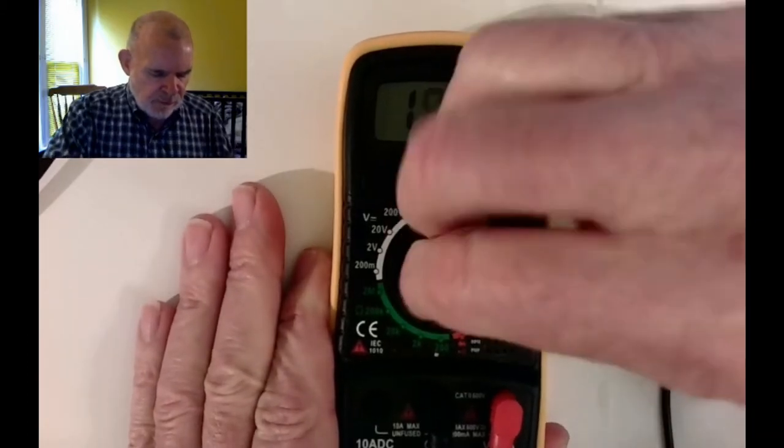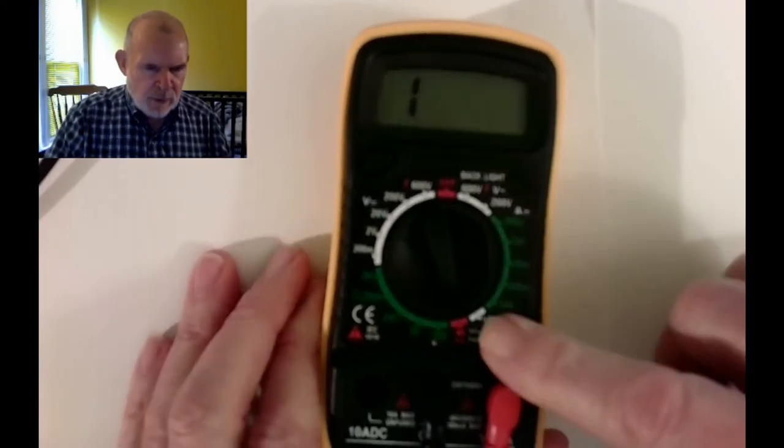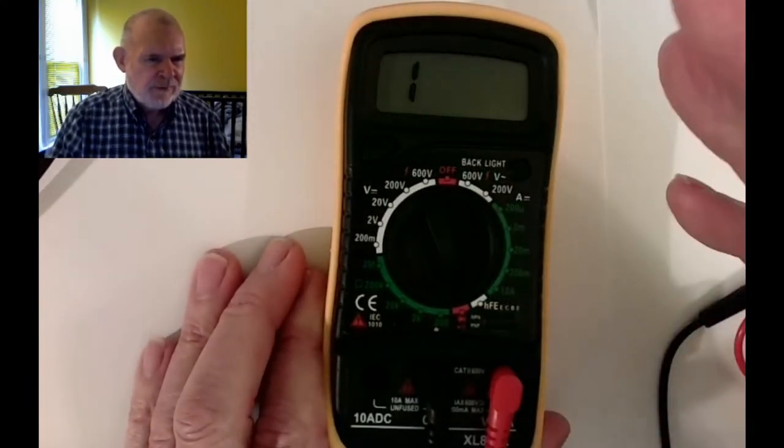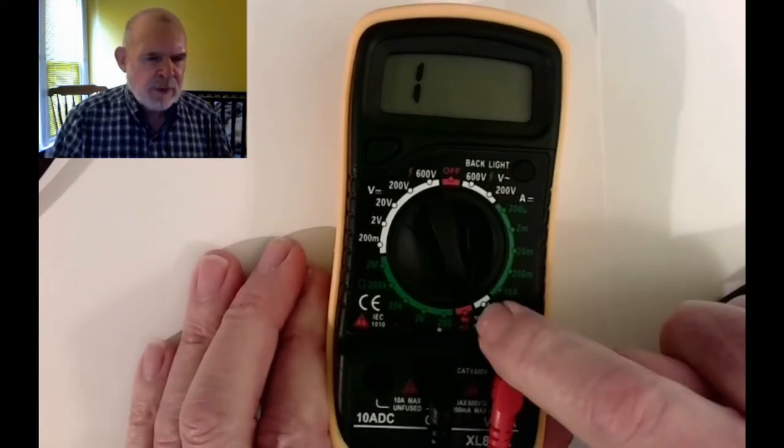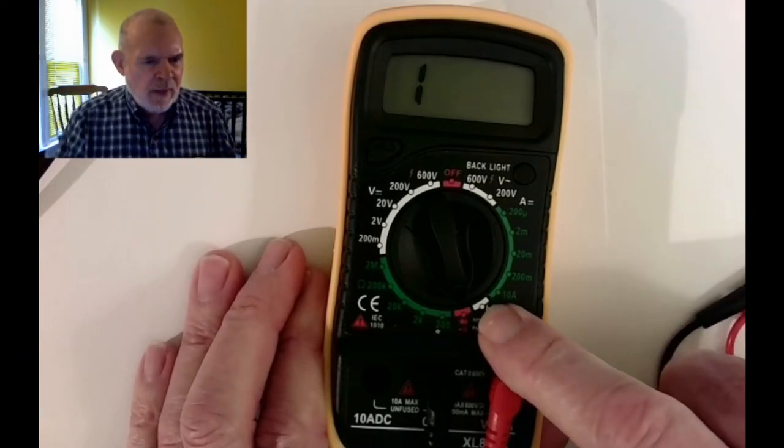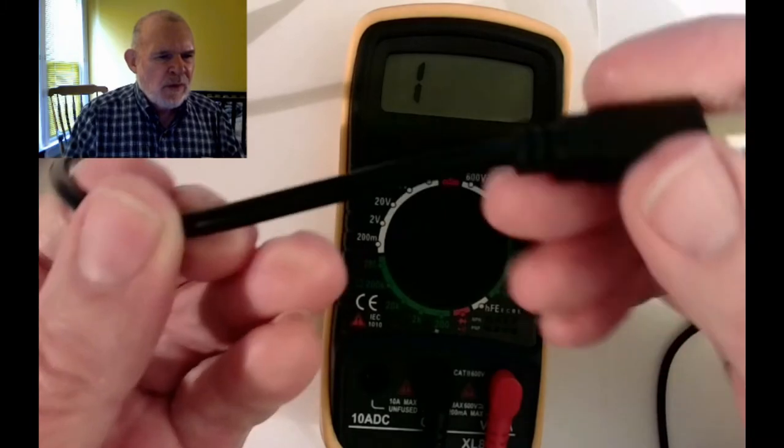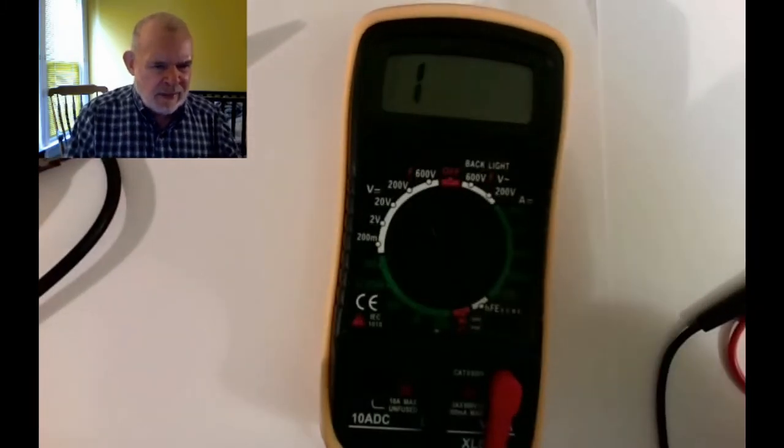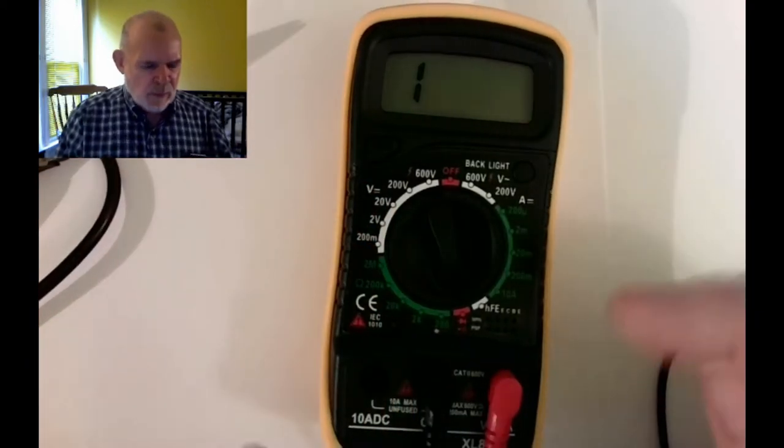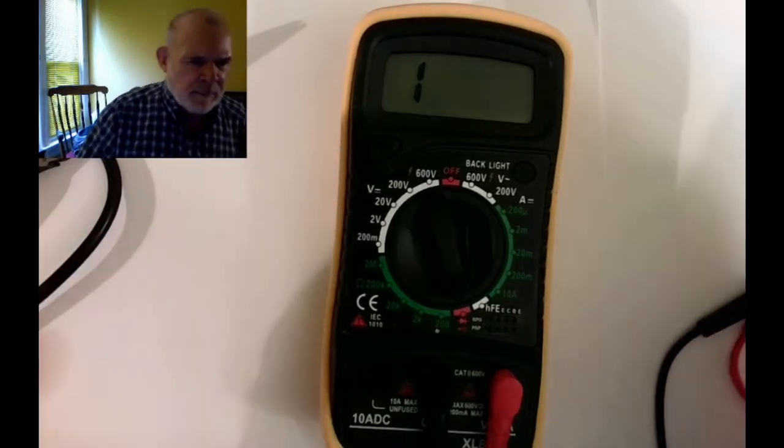As we keep going around, the next set of ranges is for resistance, and then we have this one in red which is actually another resistance scale for measuring continuity. I don't really want to know the number, I just want to know if one end connects to the other end. What this will give me is a little buzz, a little audible sound that says there's a connection.